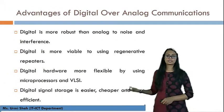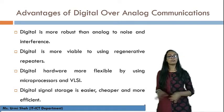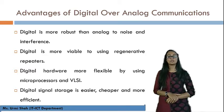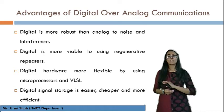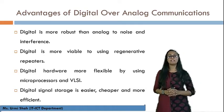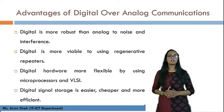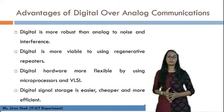Next we will be discussing the advantages of Digital over Analog Communication — basically why we prefer Digital rather than Analog Communication. Digital is more robust than Analog to Noise and Interference. Noise and Interference are very important parameters in any communication system which can distort, disturb, or interfere with any communication process. So Digital Communication is very robust towards Noise and Interference signals, which is a very good quality when choosing Digital over Analog. This is one of the most important advantages.